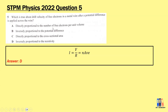Option A: directly proportional to the number of free electrons per unit volume — this is electron density, but v is inversely proportional to n, so this is wrong. Option B: inversely proportional to the potential difference — also wrong, as drift velocity is directly proportional to the potential difference. Option C: directly proportional to cross-sectional area — wrong, v is inversely proportional to area. Option D: inversely proportional to resistivity — correct, since drift velocity is inversely proportional to resistance, and resistance is directly proportional to resistivity. Answer is D.